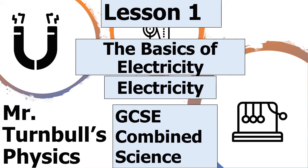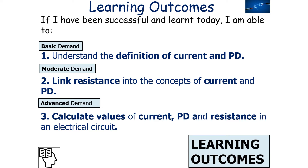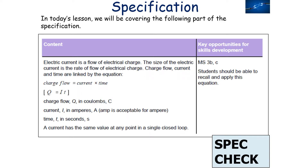Hello and welcome to today's lesson where we're going to be looking at the basics of electricity, which is part of the electricity topic in GCSE combined science. In today's lesson, we're going to look at understanding the key definitions for electricity. If we've been successful in today's lesson, we should be able to understand the definition of current and potential difference, link resistance into the concepts of current and potential difference, and calculate values of current, PD, and resistance in an electrical circuit, which falls into the GCSE combined science specification for electricity.